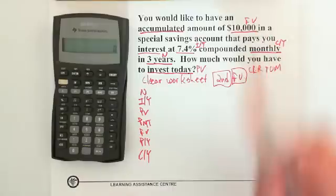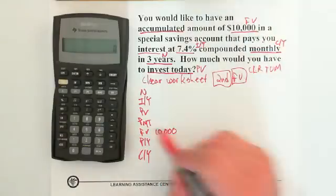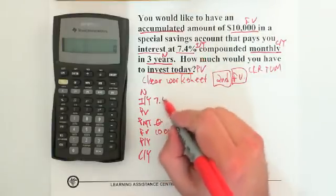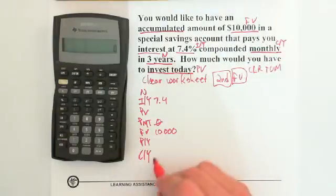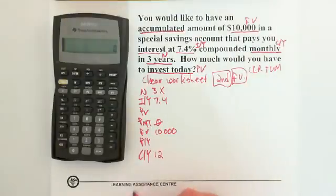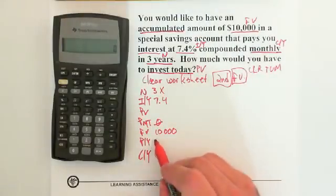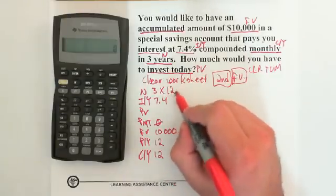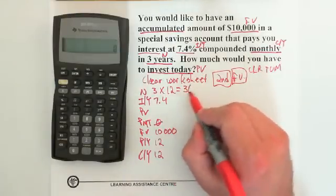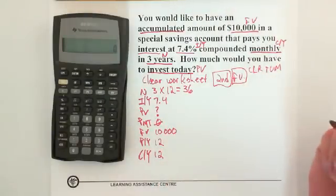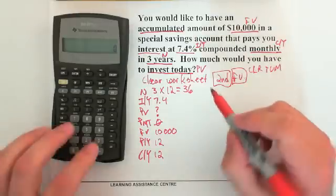Let's fill in the row of buttons. FV is $10,000, no payments so PMT is zero, IY is 7.4%, CY is monthly or 12. Since there are no payments, PY must equal CY — both will be 12. Then N = 3 × 12 = 36. Present value is what we're looking for, so we put a question mark beside PV.